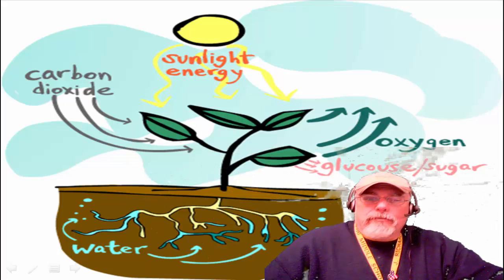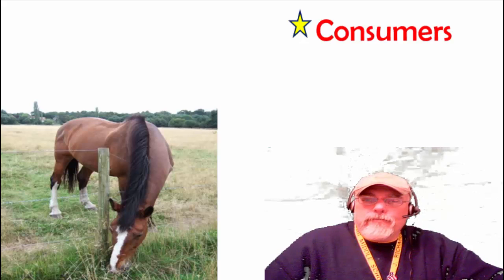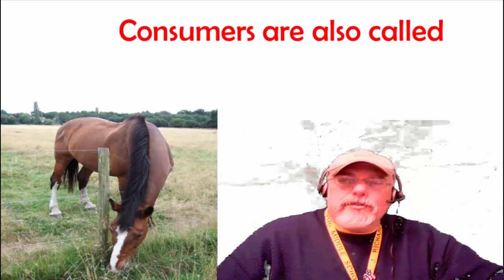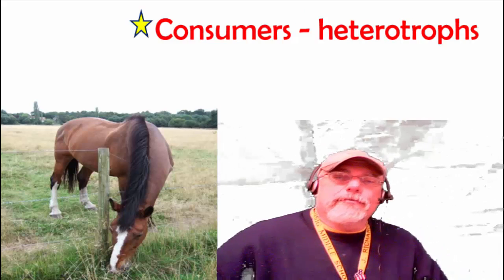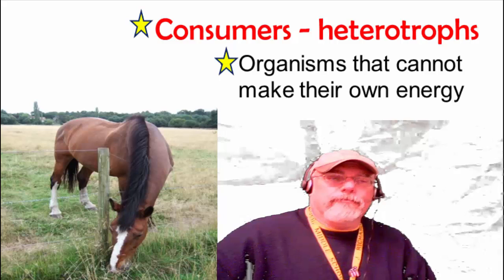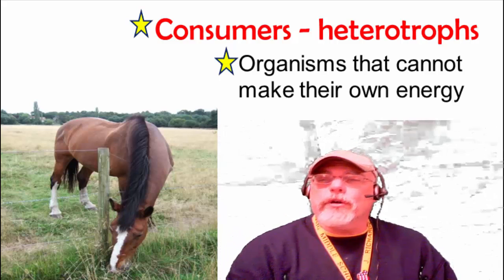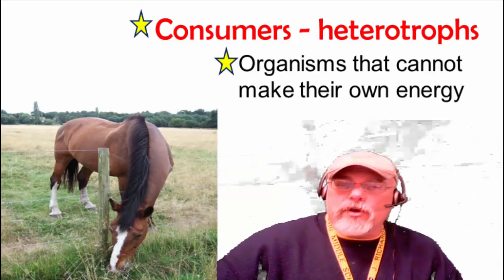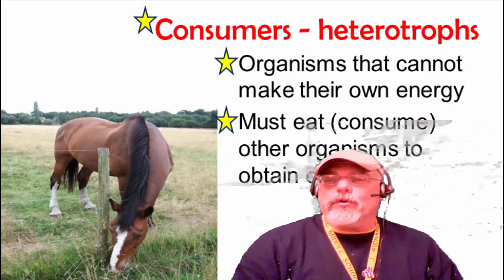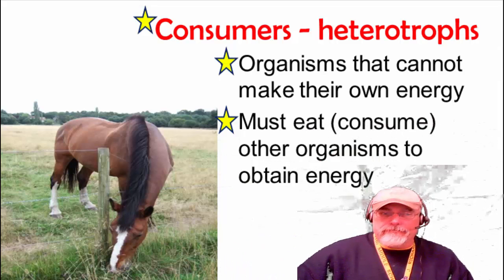Here's a little diagram for you to study. Consumers are also called heterotrophs. Heterotrophs, or consumers, are organisms that cannot make their own energy directly, so they need to eat or consume other organisms to obtain energy from them.